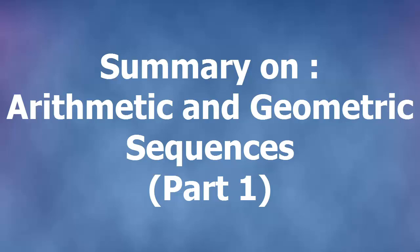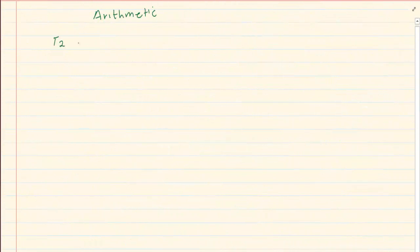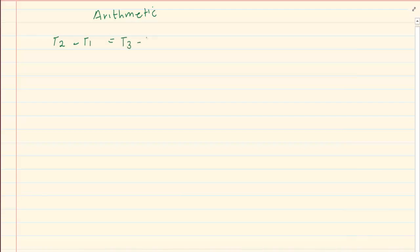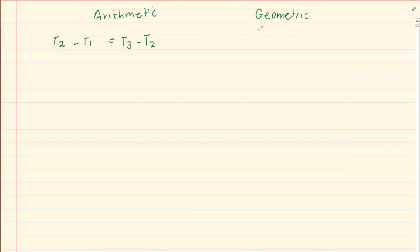The first thing you need to remember is that for arithmetic, the test is: term 2 minus term 1 is equal to term 3 minus term 2. Whereas the test for geometric is: term 2 divided by term 1 is equal to term 3 divided by term 2.